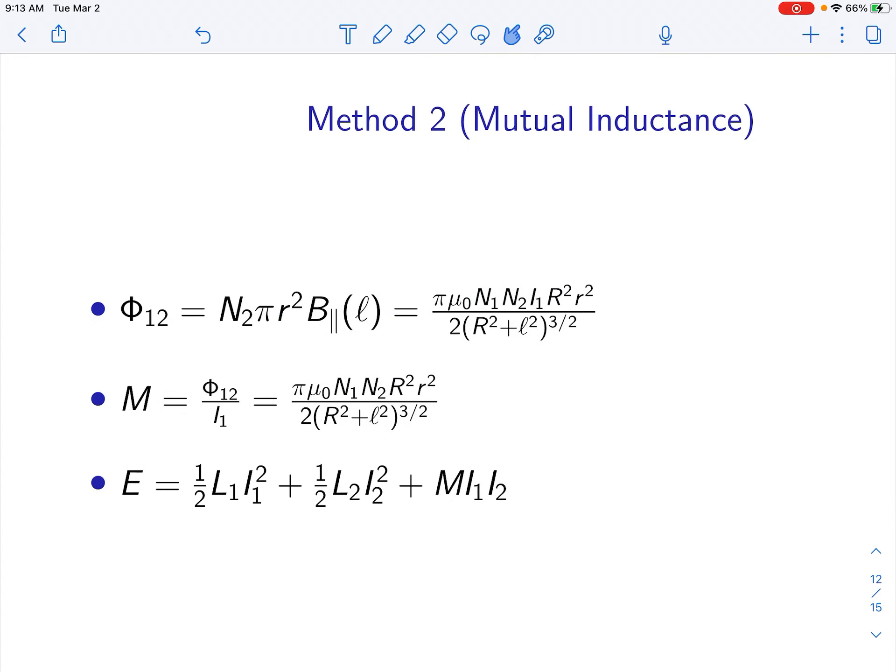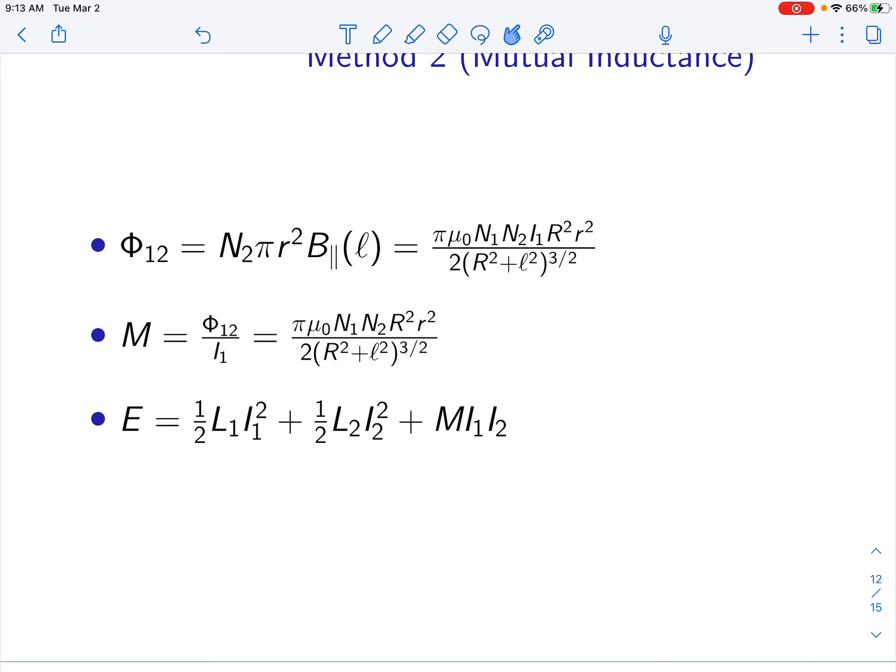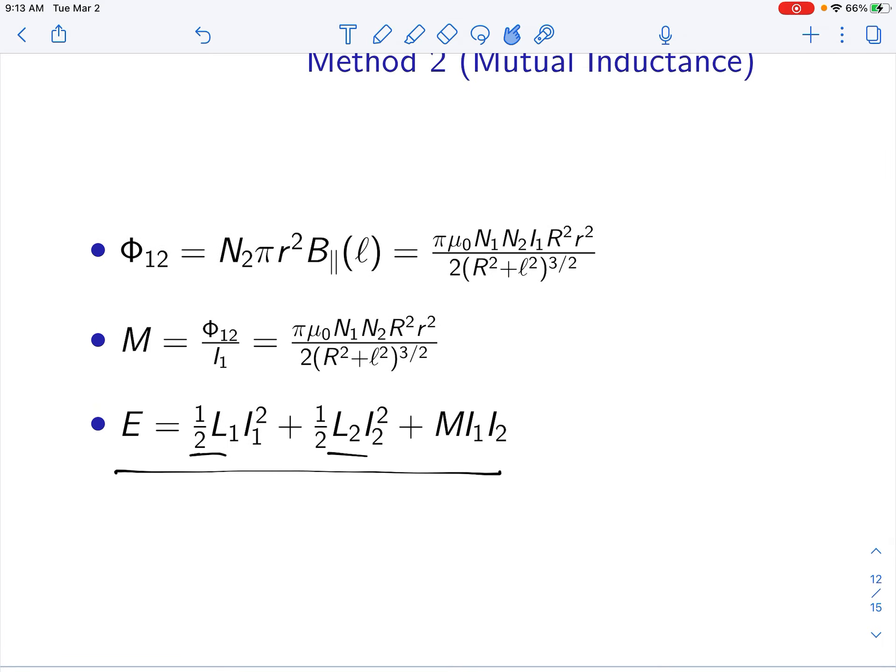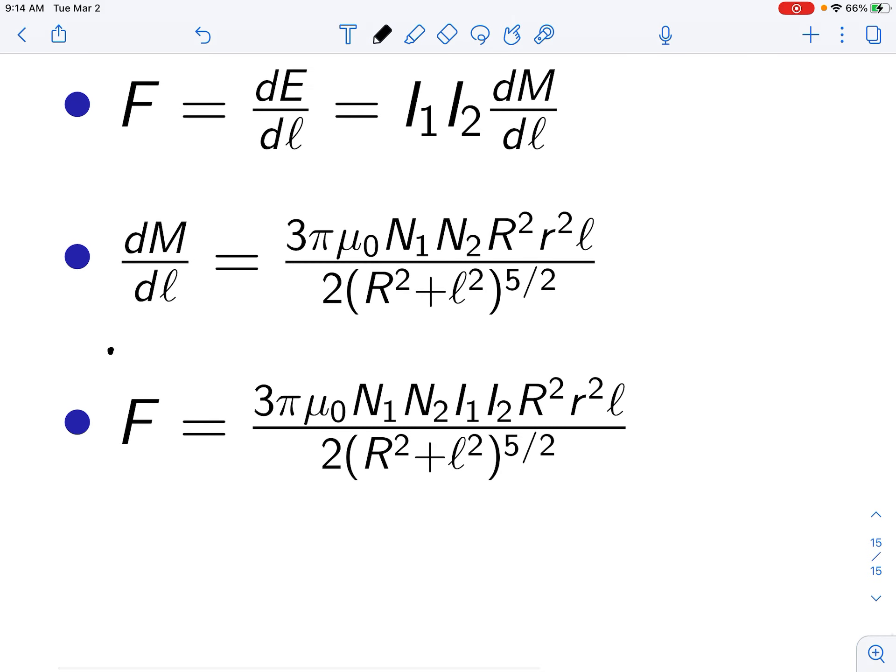Now we consider the total energy. We consider the energy because taking the derivative of energy with respect to L will give us the force. This is the total energy of all the solenoids. We know that L1 and L2 are just their own inductances. By taking the derivative dE/dL, these two components don't even matter because they don't have any length components in them. We just had to calculate dM/dL, which is easy with a straightforward derivative. Just plugging in, you get the same formula as the previous solution.